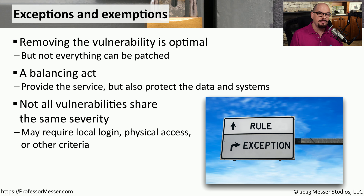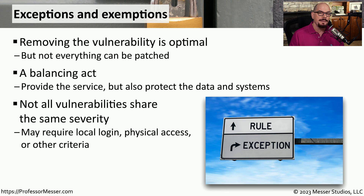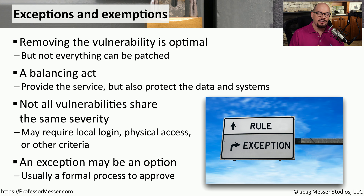We're able to make these decisions regarding an exception or an exemption because not all vulnerabilities are the same. For example, there are some vulnerabilities that can only be exploited if you are local on that device. And since many of our servers are inside data centers, it would be very unlikely for an attacker to get access to the data center, find that server, and then perform that particular exploit. In those cases, the committee might decide that not patching that system is a perfectly reasonable security risk. This is obviously a decision not commonly made by one individual — it would take a large number of people to look at the vulnerability, understand the risks, and then as a group decide to create an exemption.